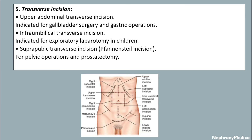Transverse incision. Upper abdominal transverse incision is indicated for gallbladder surgery and gastric operations. Infraumbilical transverse incision is indicated for exploratory laparotomy in children, and the suprapubic transverse incision, also known as the Pfannenstiel incision, is for pelvic operations and prostatectomy.